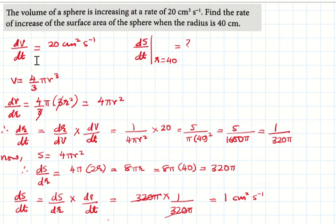So it means that when the volume is increasing at 20 cm³ per second, the surface area increases at a rate of 1 cm² per second when the radius is 40.